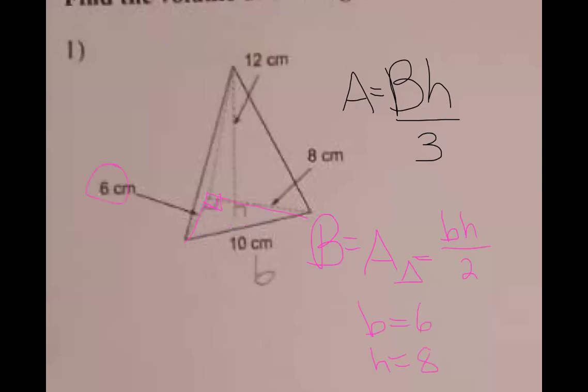So 6 times 8 divided by 2 gives you 48 divided by 2, which is 24. So the area of the base, this one, is 24.